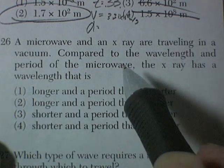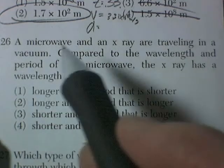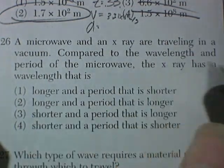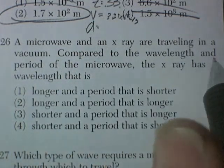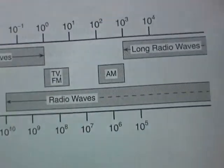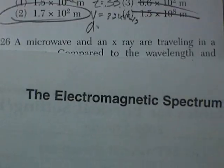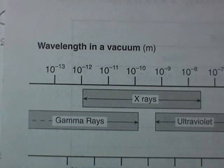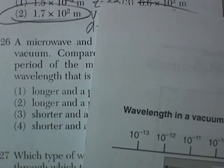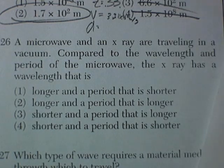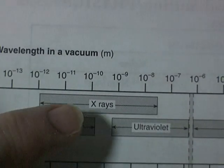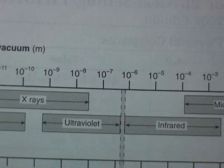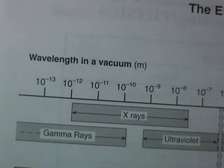26. A microwave and an X-ray are traveling in a vacuum. It's a physics joke. Compared to the wavelength and period of the microwave, the X-ray has a wavelength that is. Well, I'm going to go find these on the chart of the electromagnetic spectrum. And we've got X-rays, and we've got microwaves. So we've got X-rays here, we've got microwaves.